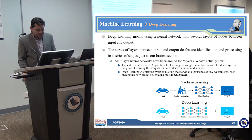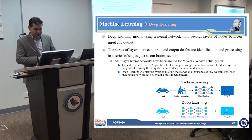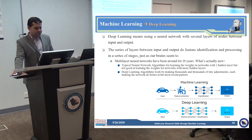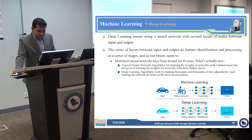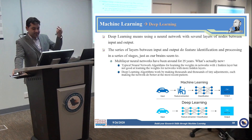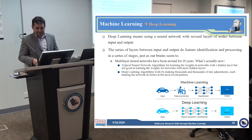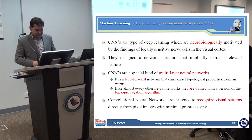Deep learning algorithms work by making thousands and thousands of tiny adjustments — what we call parameter adjustments or weights — each making the network do better at recognizing the most recent pattern. In typical machine learning, you have input data, you extract features manually, then apply classification and find the result. In deep learning, the feature extraction part is skipped — you just apply the deep learning algorithm, which does the extraction and classification at the same time, and then you get the results.